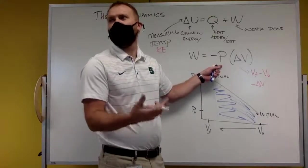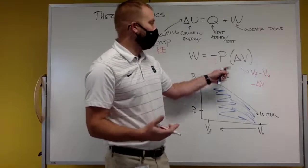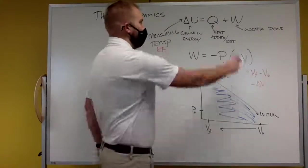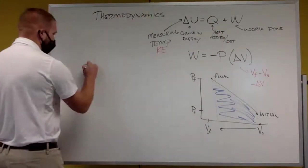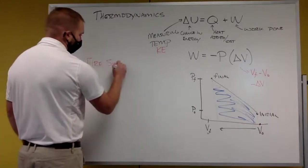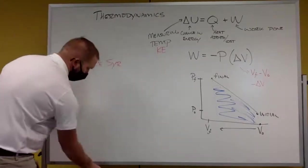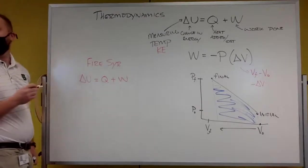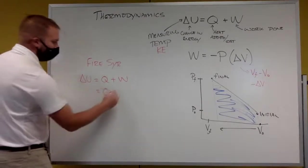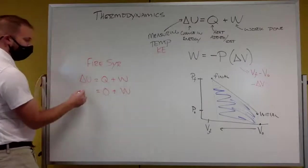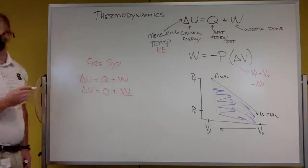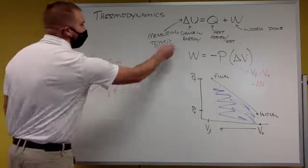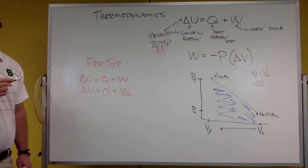Obviously my pressure is some value. But look: negative P times negative delta V makes W positive. For the fire syringe, change in energy equals Q plus W, which equals zero plus W. So what does our change in energy equal? It equals W. That tells us the temperature is going to go up.